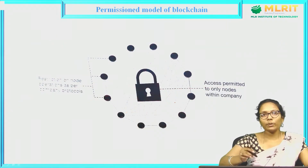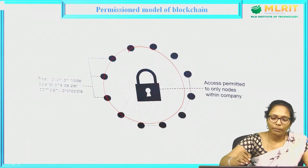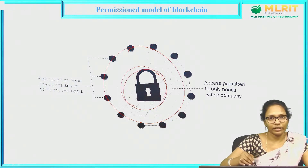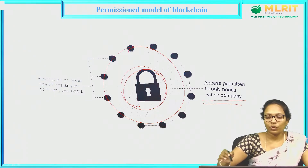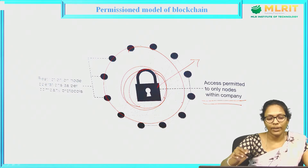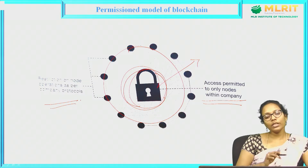In a permissioned blockchain, all these nodes are locked — they cannot access any data. Access is permitted only to nodes within the company. The central person will decide who can access this data. There are restrictions on node operations as per company protocols.